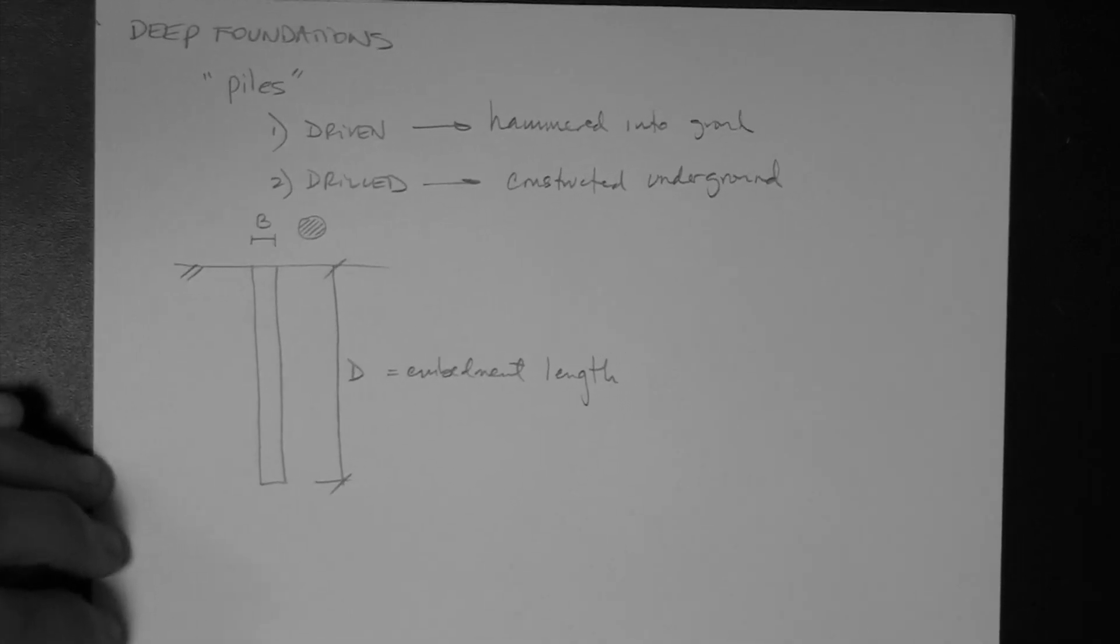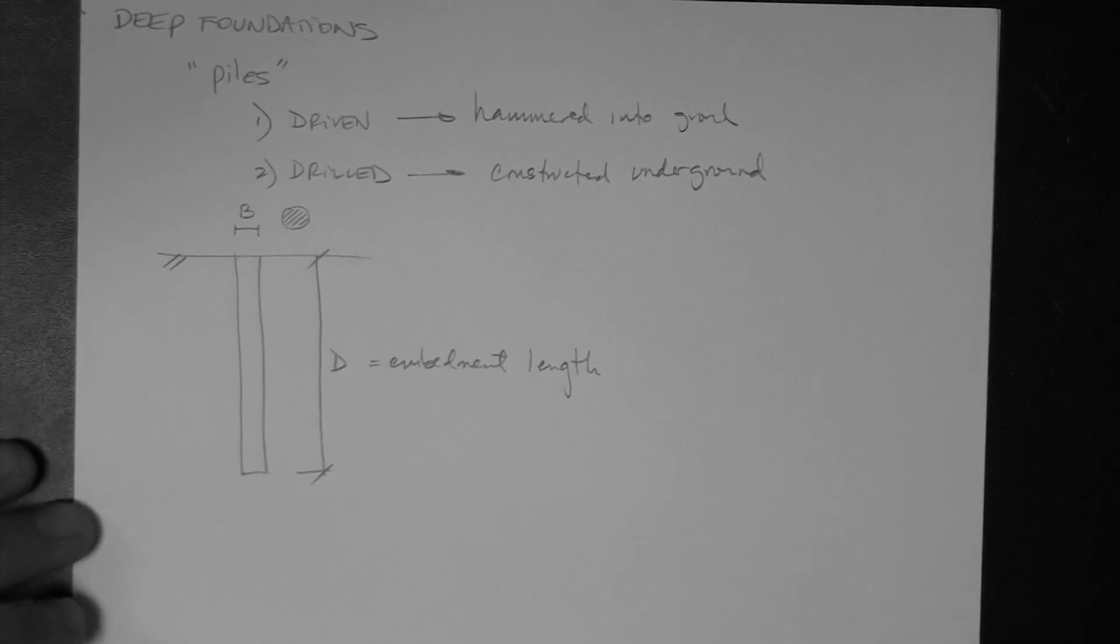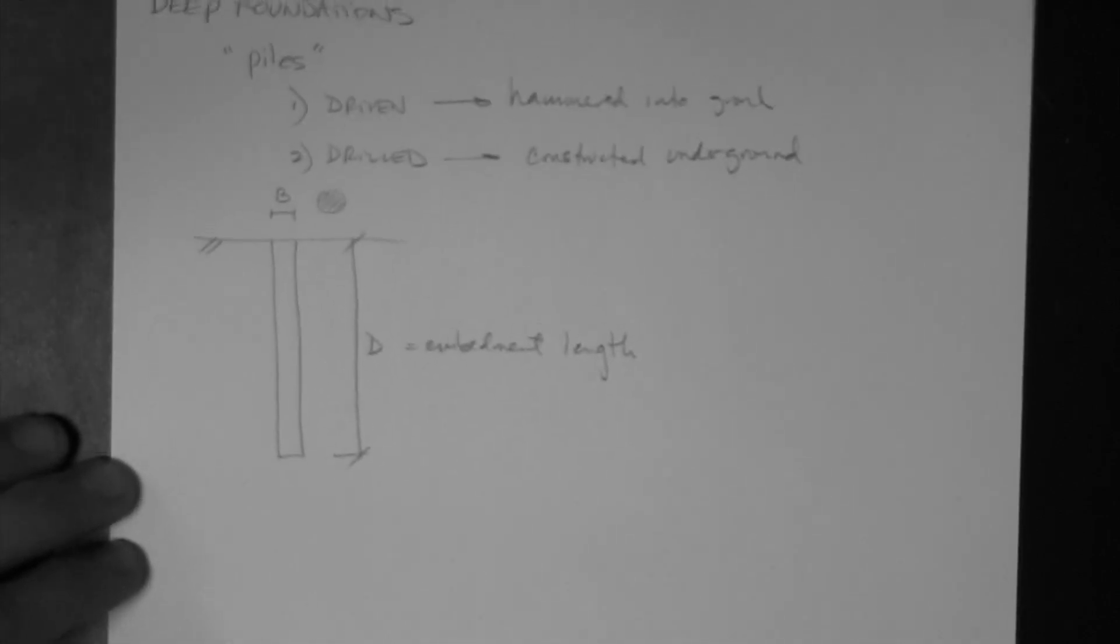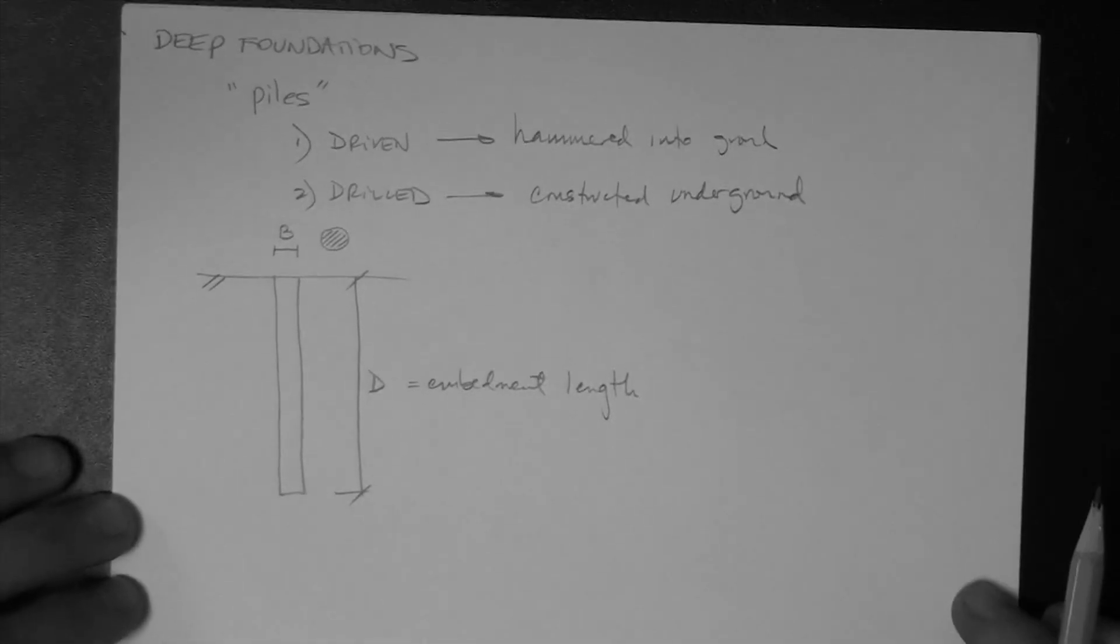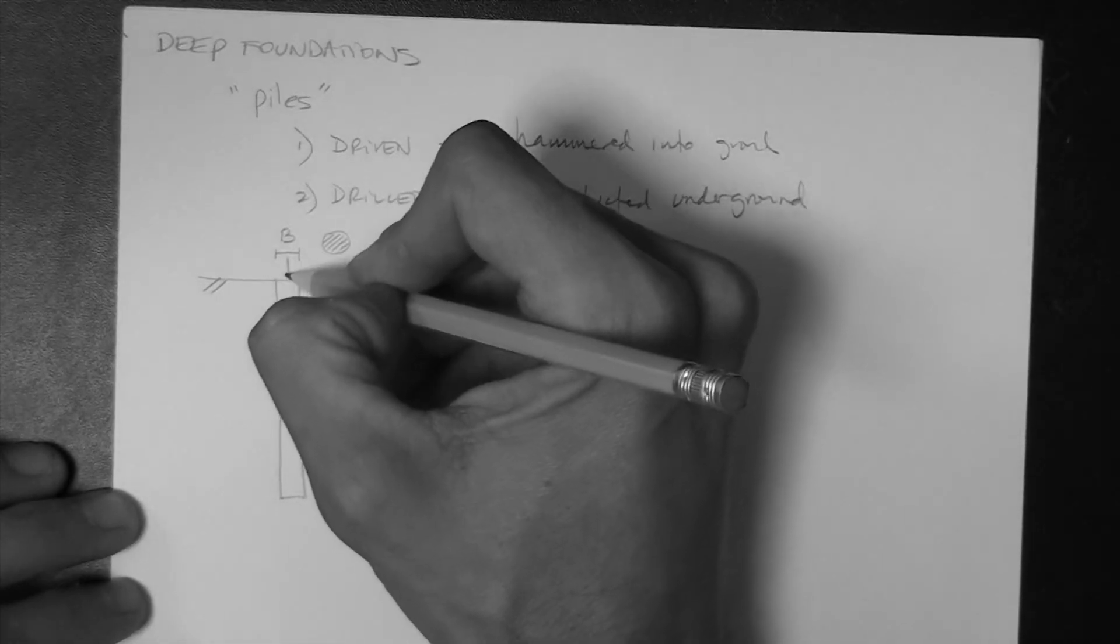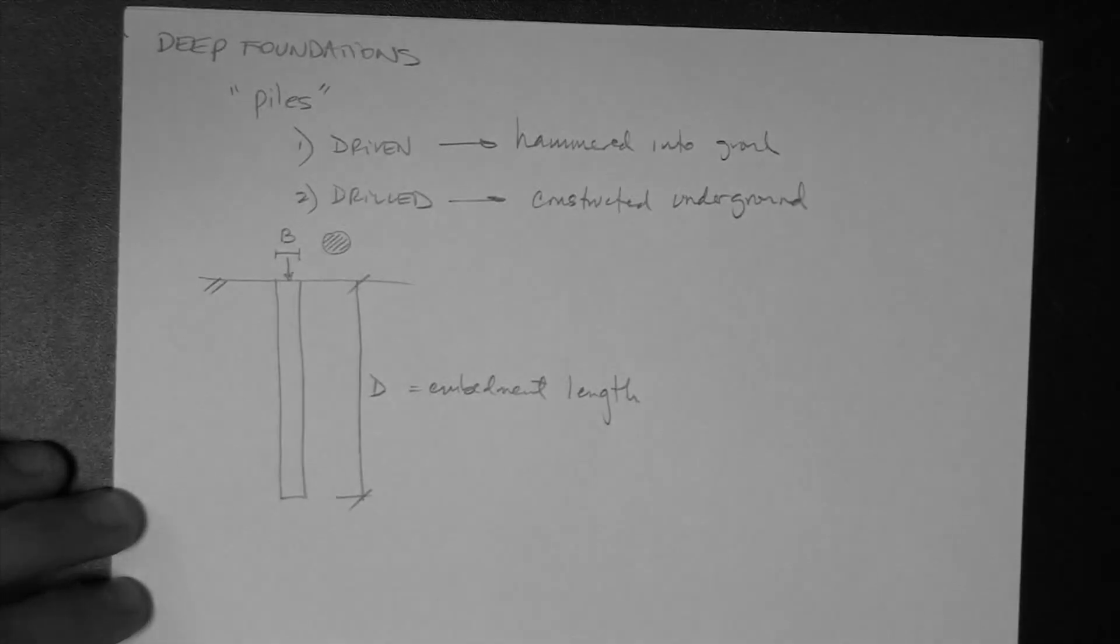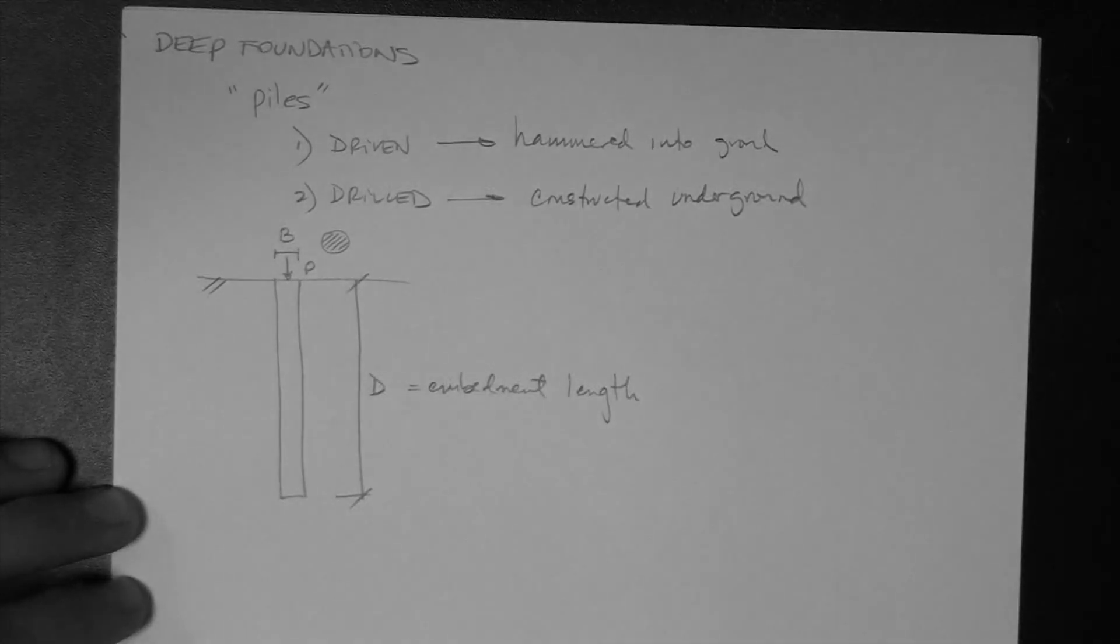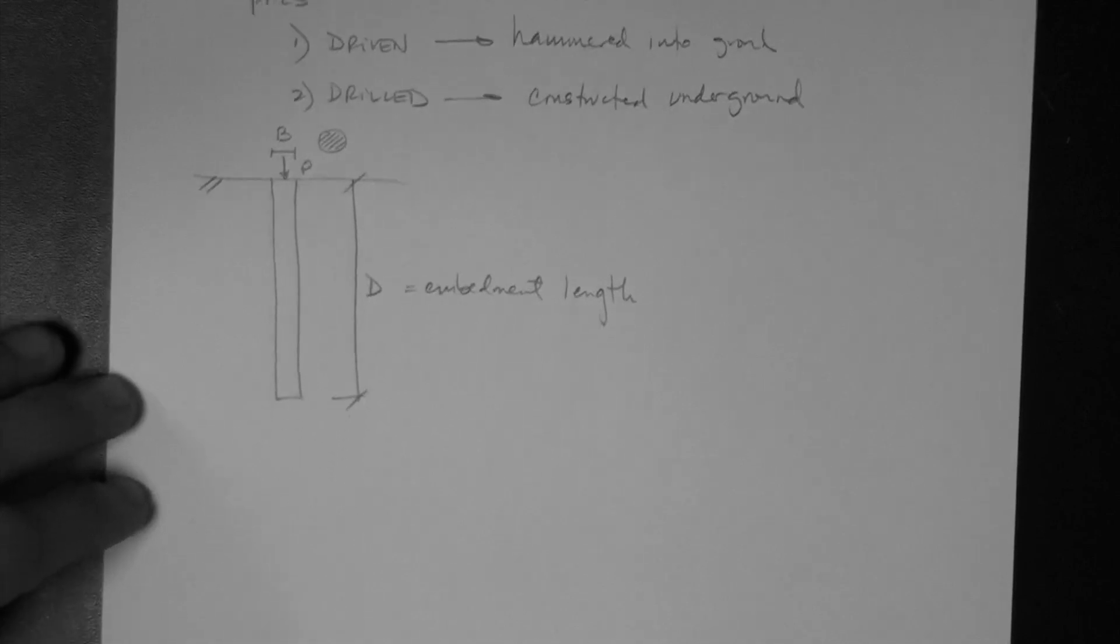All right, let's go back to the driven versus drilled. Well, clearly, the load, the axial load on the pile is applied as denoted by that arrow, right? This is the column load, for example, column axial load, P. Let's go back to the drilled versus driven.